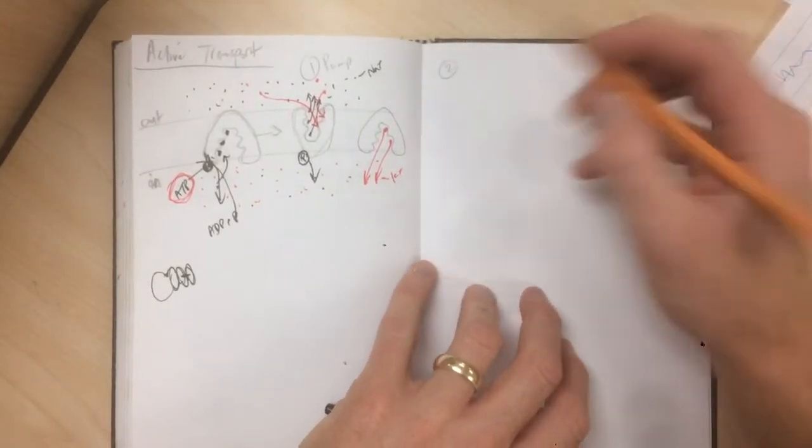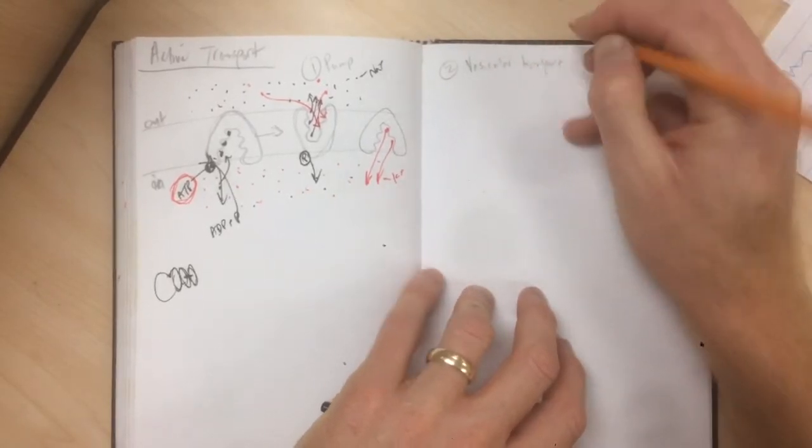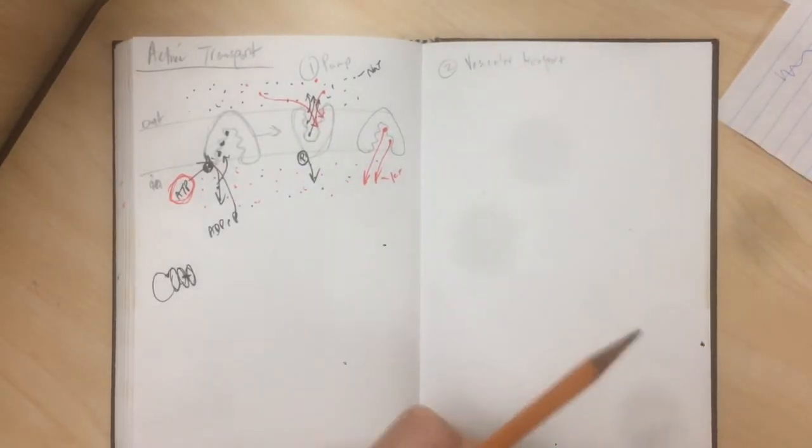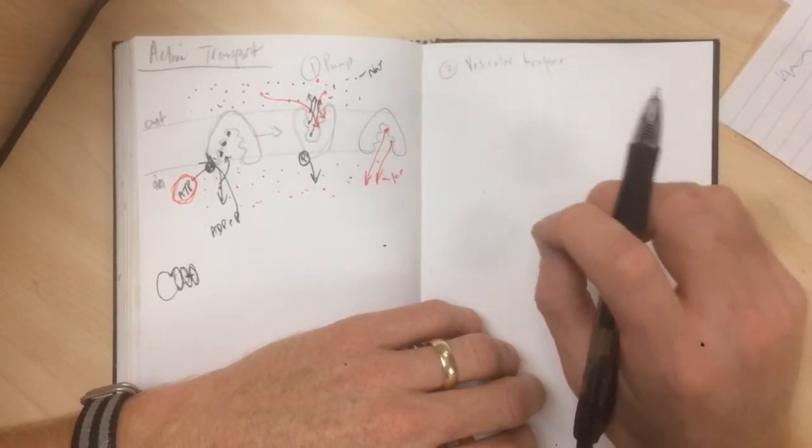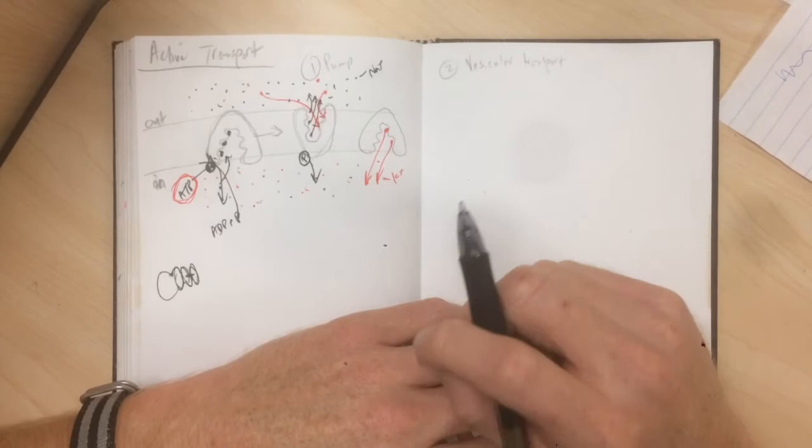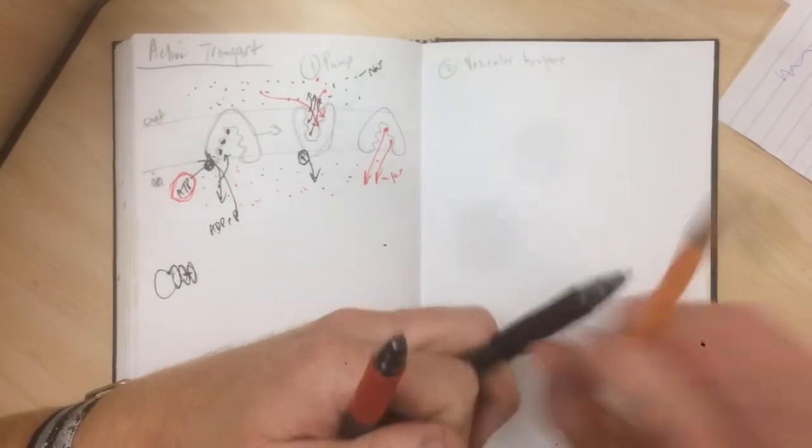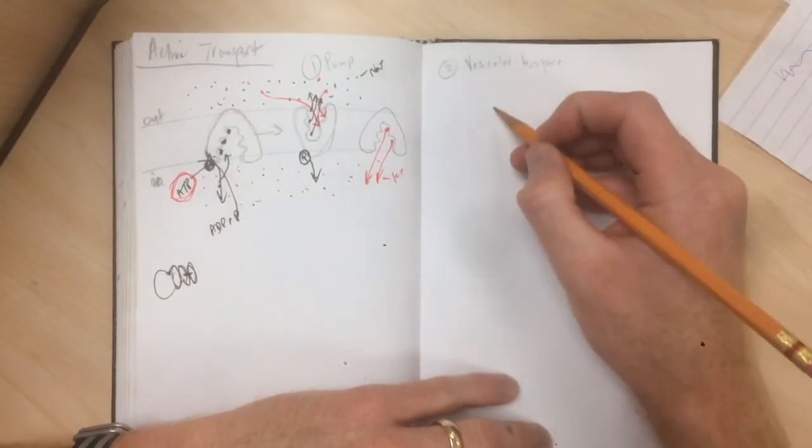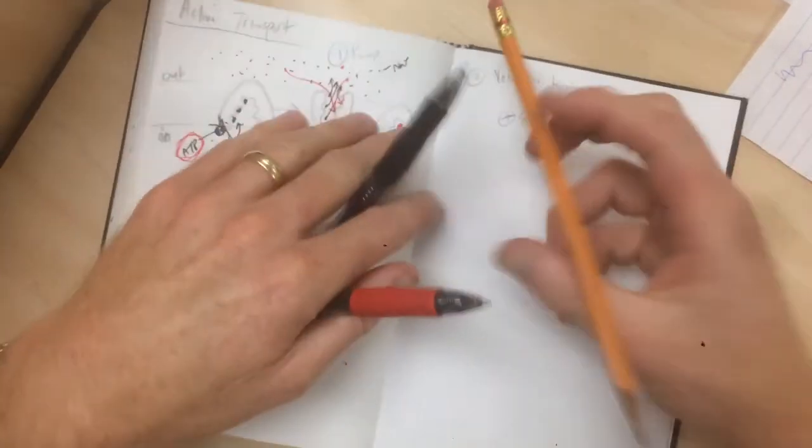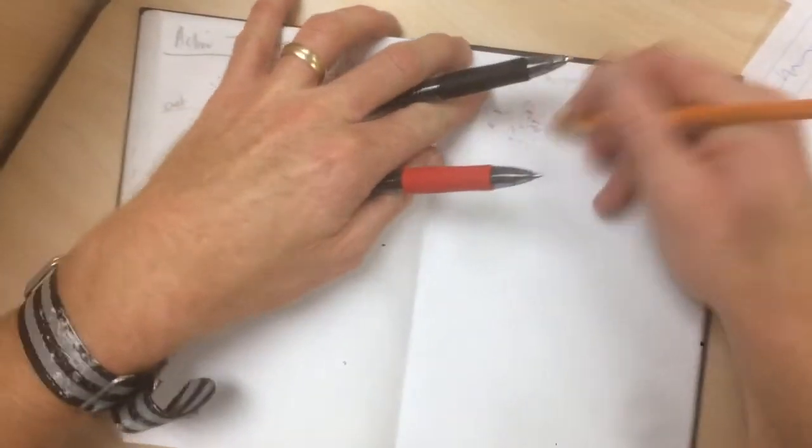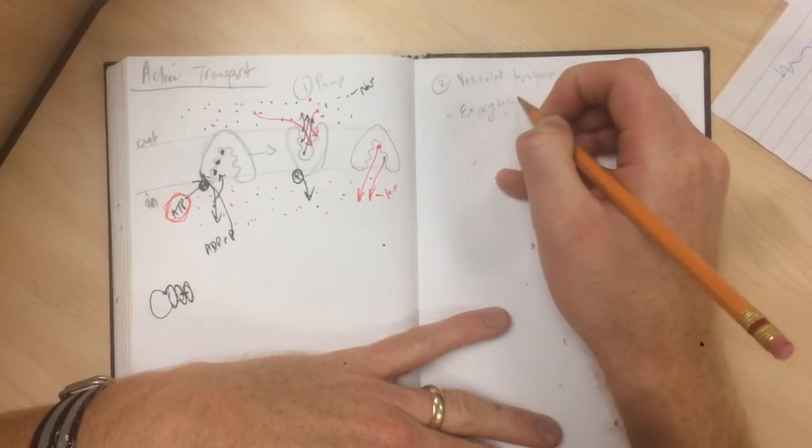A second example is called vesicular transport. Vesicular transport occurs when the cell membrane itself engulfs a particle, bringing it into the inside of the cell, or it releases particles through vesicles. We'll talk about the first example. So the first example of this would be exocytosis.